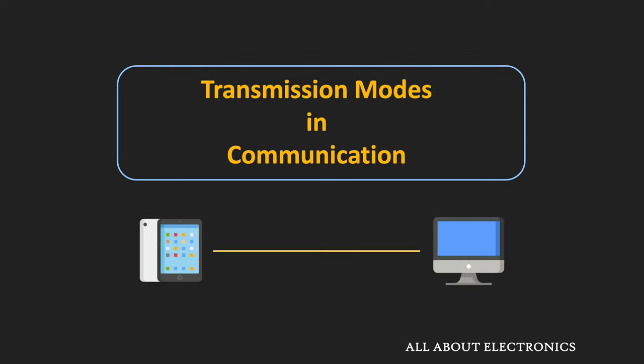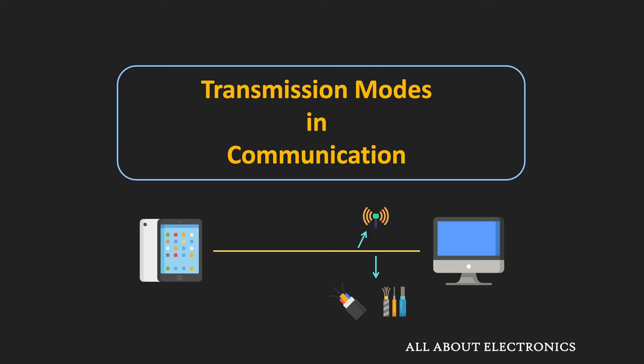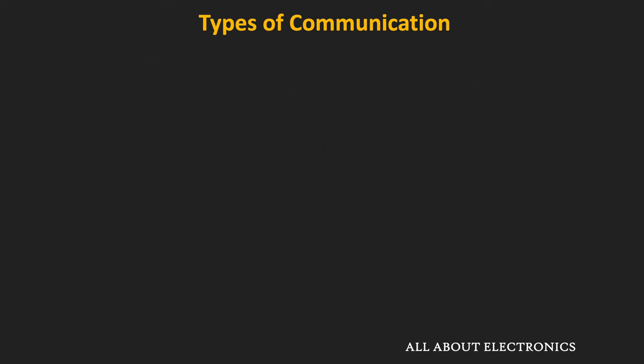Data communication is basically an exchange of information between two devices over a specific medium. This information could be voice, text messages, images, or videos. The medium could be wired, like optical fibers or coaxial cables, or it could be wireless. Data communication between two devices can be one-way or two-way, and accordingly there are three possible modes of transmission.